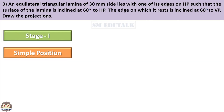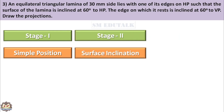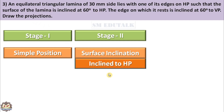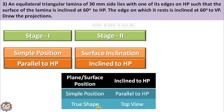In stage 1, we have to draw the simple position of the lamina. In stage 2, the surface of the lamina should be inclined to the specified reference plane. Let us check what is given in the question about surface inclination: the surface of the lamina is inclined at 60 degrees to HP. That is, inclination is given to HP. To draw this, refer the table to find the simple position and the true shape position. For the inclined to HP condition, the simple position is parallel to HP and the true shape is obtained in top view.